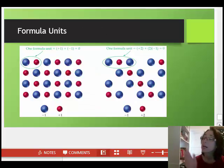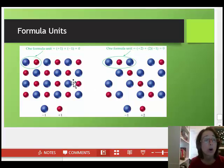The graphic on this slide is another way to model ionic structures. The smaller red spheres represent cations, while the larger blue spheres represent anions. On the left, a formula unit is circled since the cation has a plus one charge and the anion has a negative one charge.